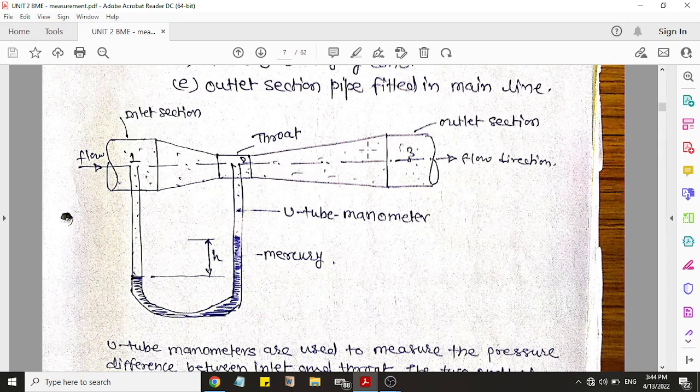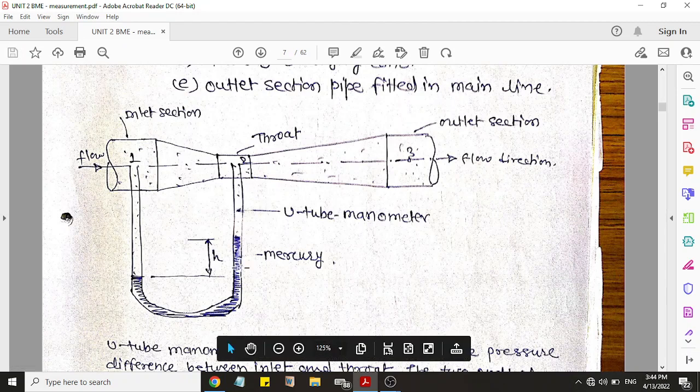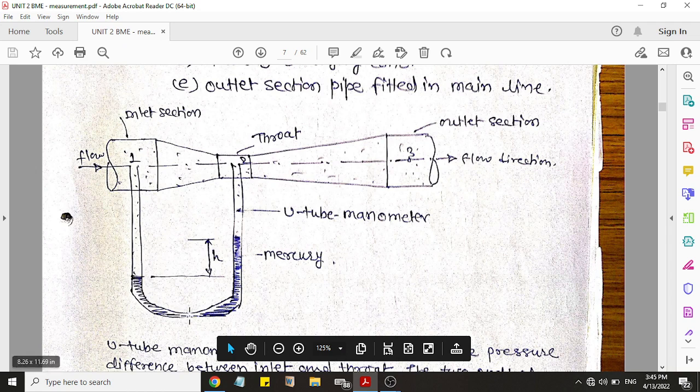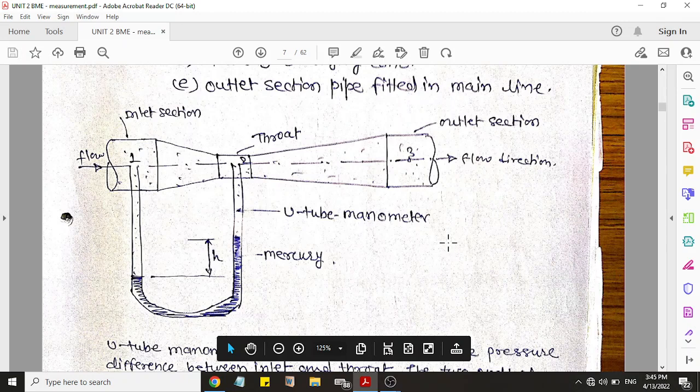So basically venturimeter has three parts: converging, throat, and diverging. And one U-tube manometer is fitted here, and mercury is filled inside. One important point is the flow should be left to right, flow should be near to the converging side.